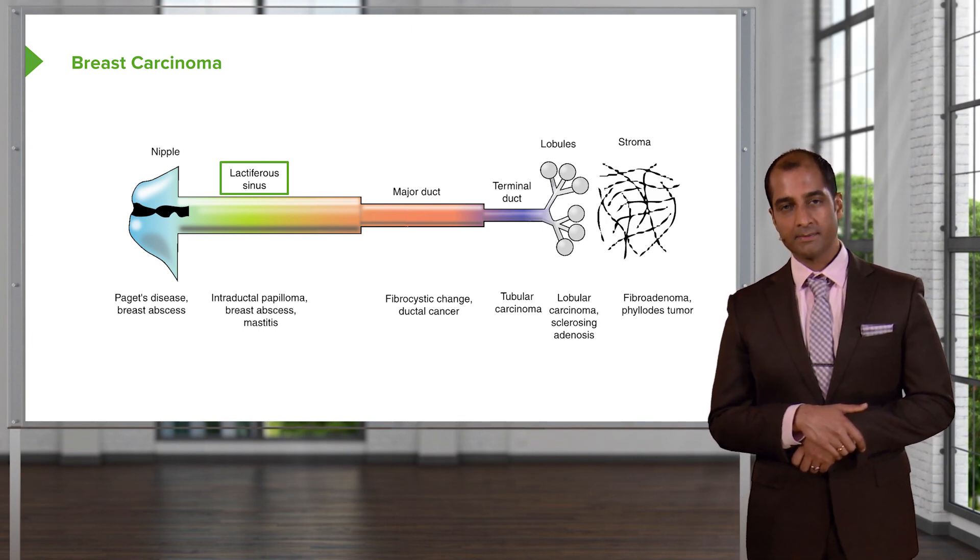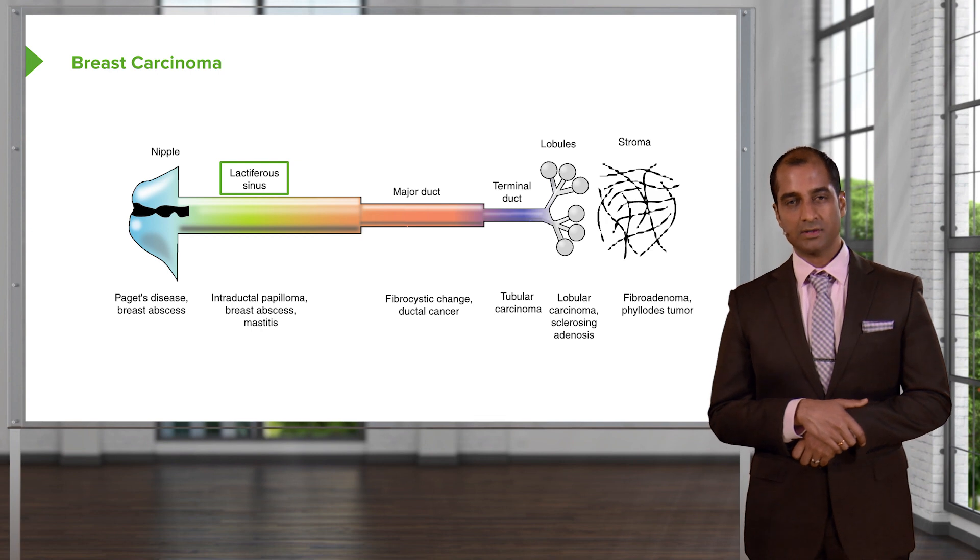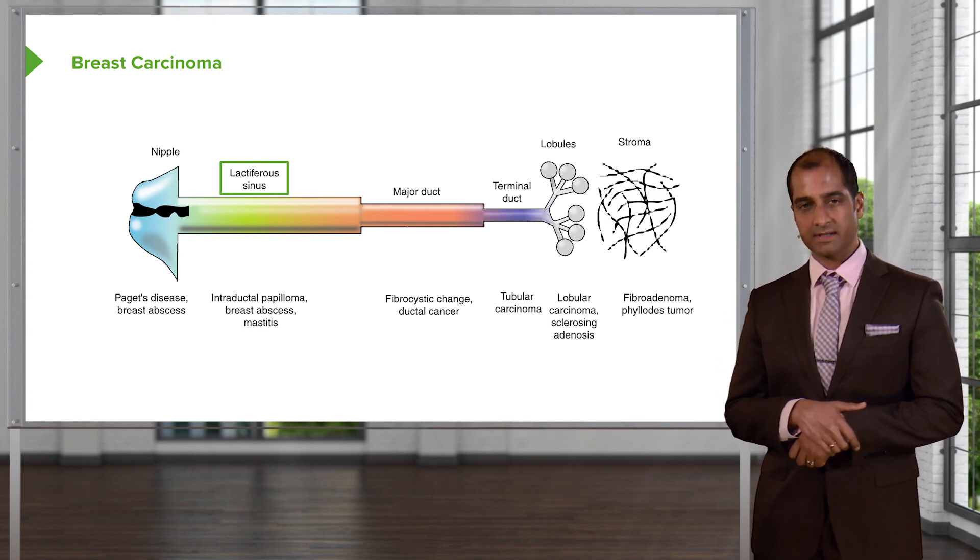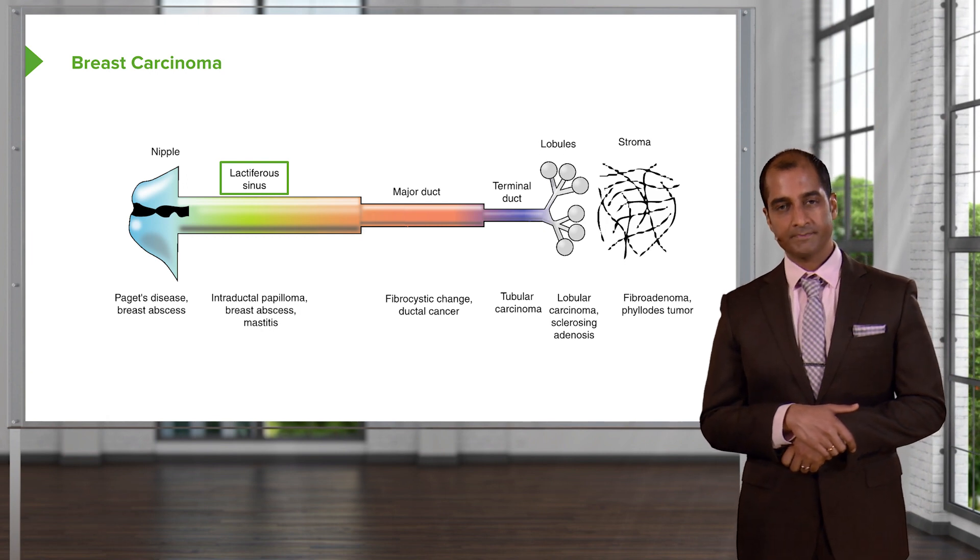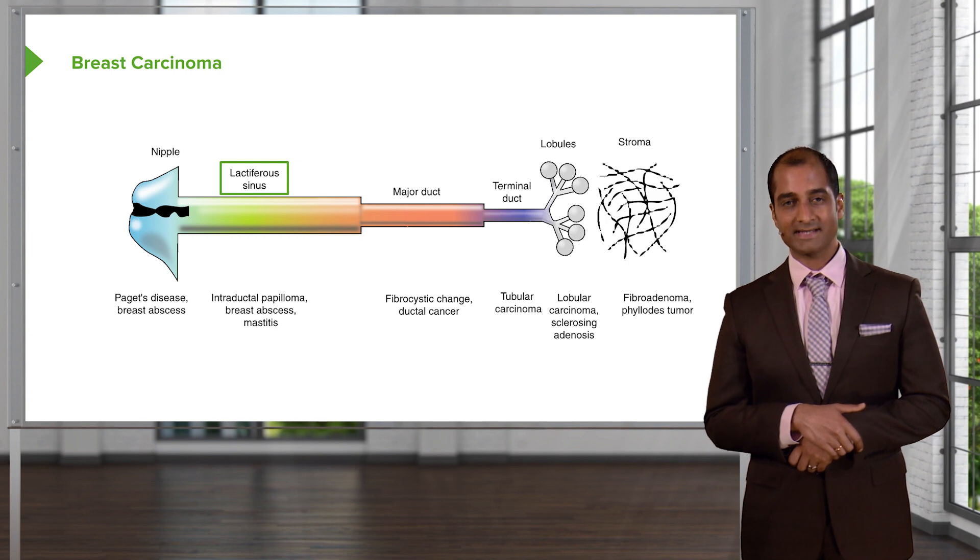From your nipple, you'll then move into the lactiferous sinus. The major pathology that we discussed in lactiferous sinus thus far is interductal papilloma. Would you please take a look at how close your lactiferous sinus is to the nipple? So therefore, any lesion or pathology to the sinus is then going to result in what?